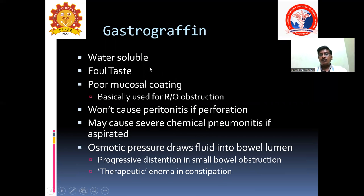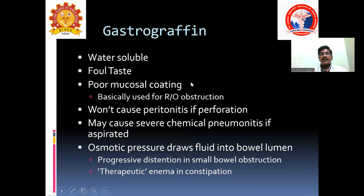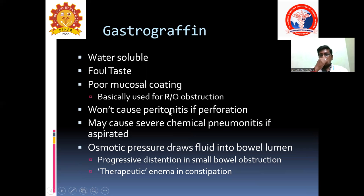Barium is the most widely used contrast agent, producing better resolution but having a chalky taste — though it now comes in strawberry flavor. Gastrografin has a foul taste, poor mucosal coating, and is more water-like in consistency. Barium, being paste-like, has very good mucosal coating and is better for identifying mucosal pathologies. Gastrografin is mainly used to identify hollow viscus perforation or anastomotic leak, as it is not harmful to the peritoneum and won't produce peritonitis.